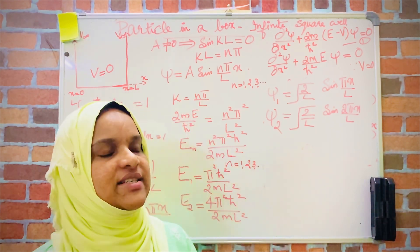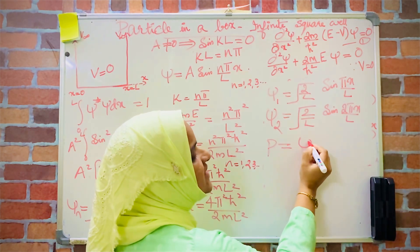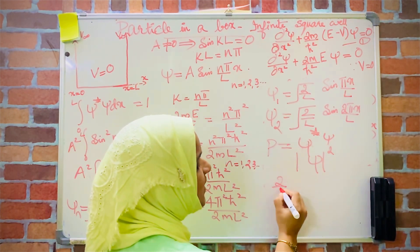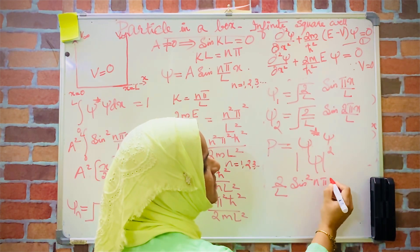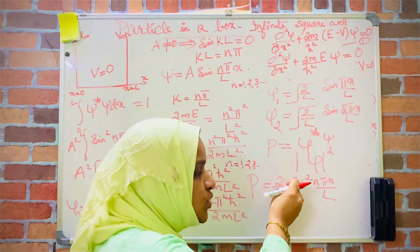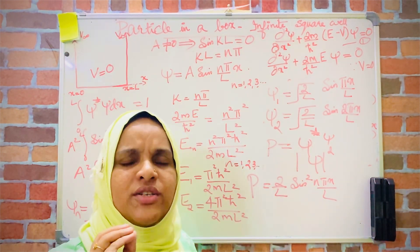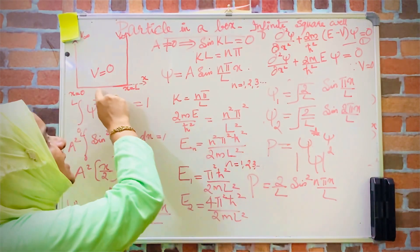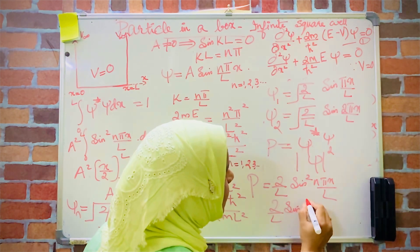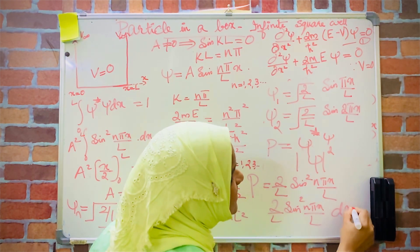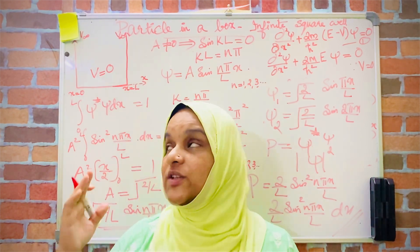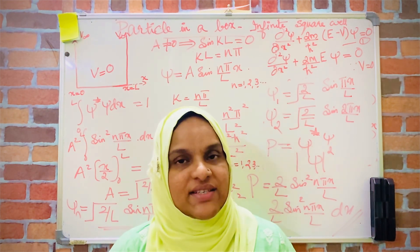The probability density is ψ*ψ = ψ² = (2/L) sin²(nπx/L). This represents the probability density of finding the particle. The probability of finding the particle in a small region between x and x+dx is (2/L) sin²(nπx/L) dx. This is what happens when a particle is trapped inside a box — energy levels are quantized and there are wave functions for each energy level.